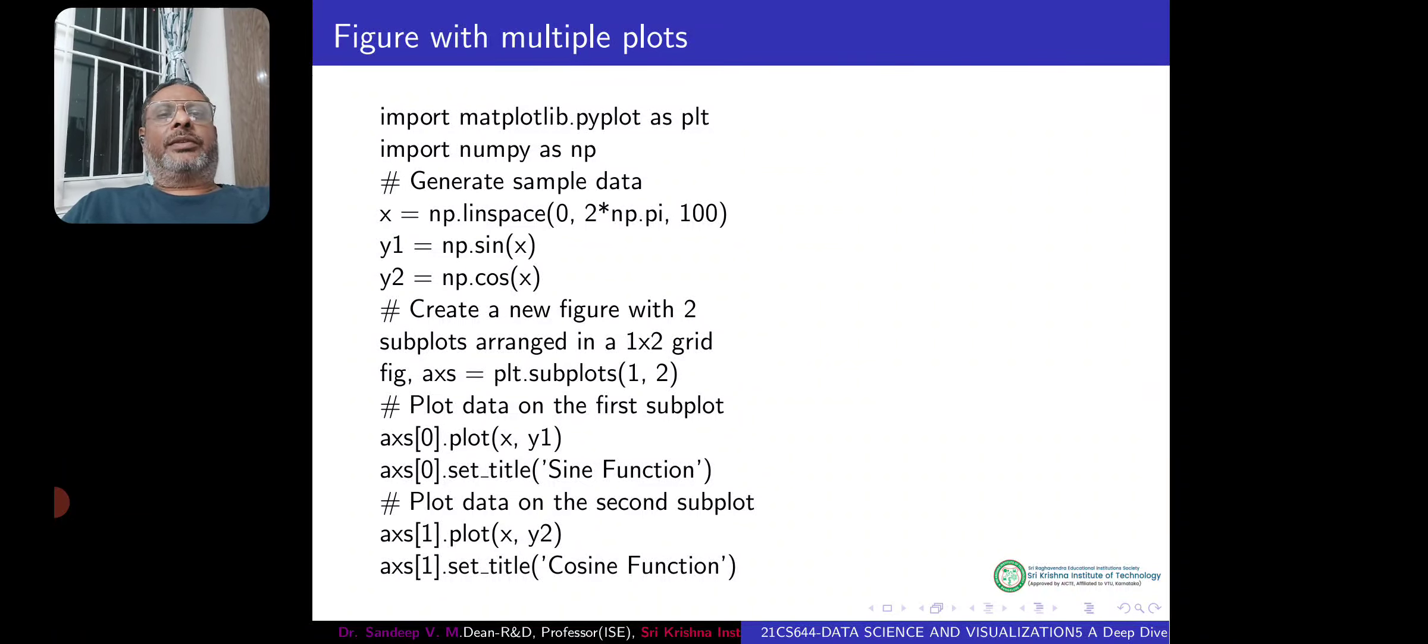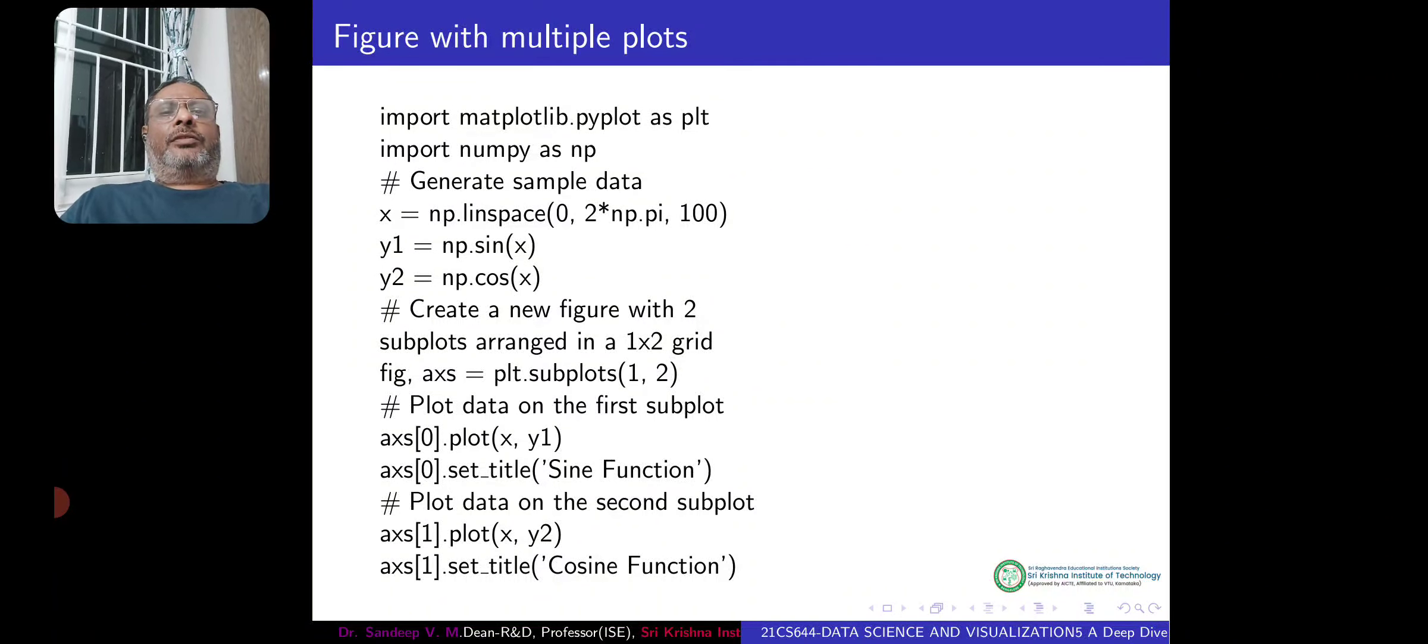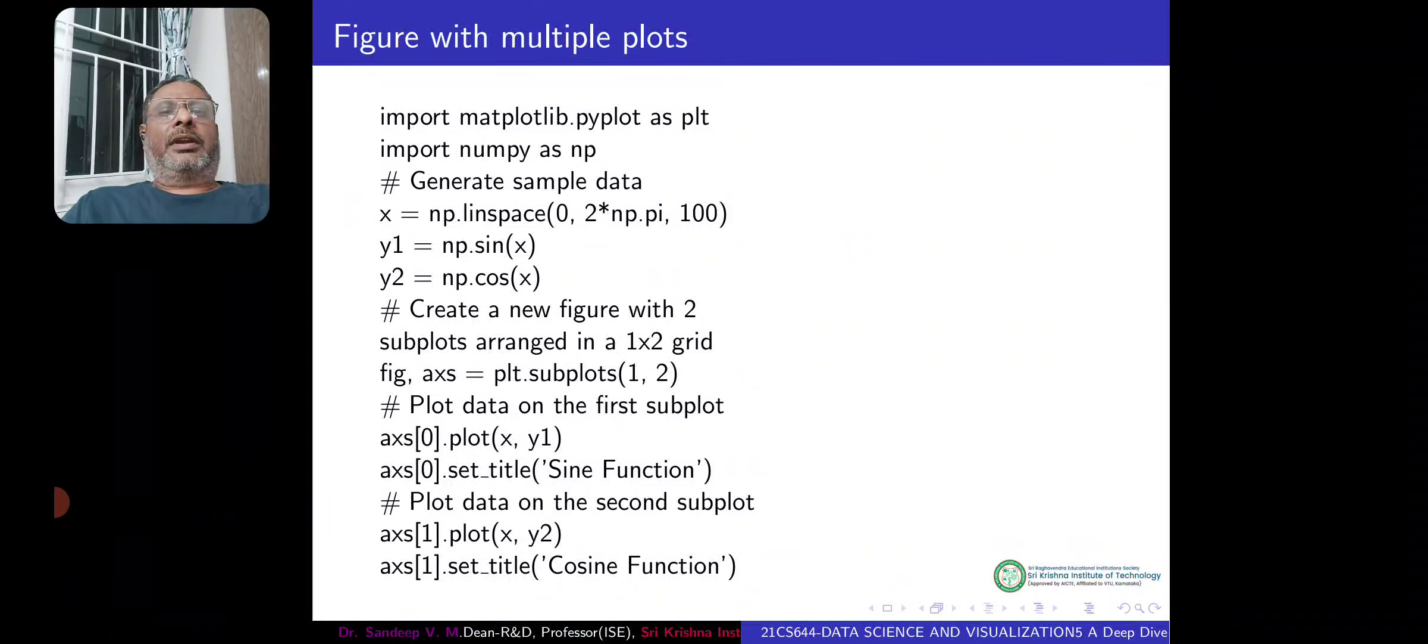ax is the axis which talks about plt.subplots 1 by 2. One means number of rows, two means number of columns. So in all, there will be two spaces created under fig. Two axis values will be there. So for the first one, ax[0].plot(x, y1). That means on x-axis it is x, on y-axis it is y1. And this is for axis 0. So for axis 0, set title as sine function. And same way, for axis 1, we plot y2 versus x, and title we set as cosine function. And at the end, we say plt.show.